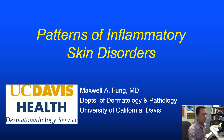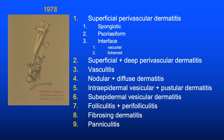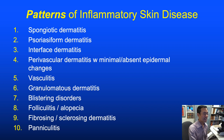With the exception of DIF testing, the vast majority of immunohistochemistry is for skin tumors. Now let's look at patterns of inflammatory skin disorders using H&E alone. The late A. Bernard Ackerman was the greatest proponent of histologic diagnosis of inflammatory skin diseases by pattern analysis. In 1978, in his legendary Gold book, he delineated nine fundamental patterns of inflammatory skin disease. Our curriculum now includes 10 patterns.